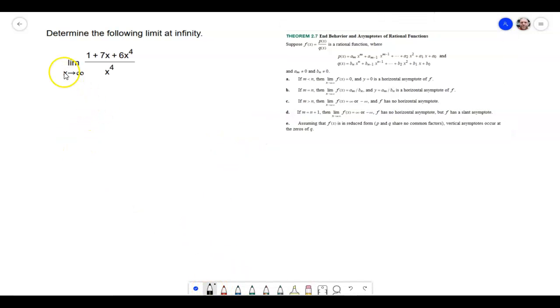So since x is approaching infinity, obviously we're not going to get a 0 on the bottom because we're talking about very large positive numbers. So one thing that I can do is I can divide both the top and the bottom by x to the exponent, which is the largest in this entire rational function, which is 4 here.